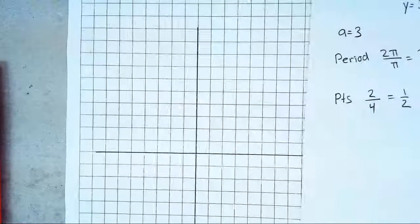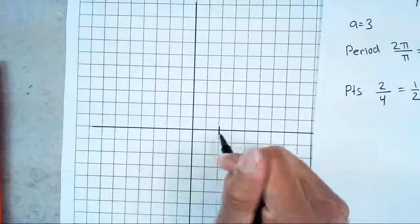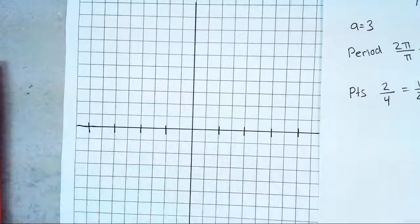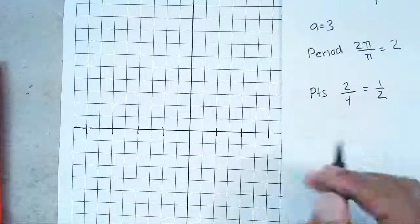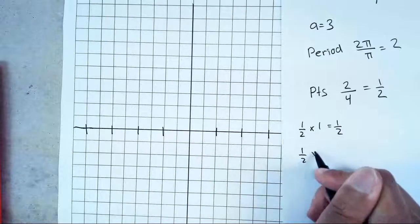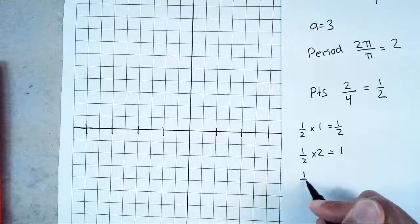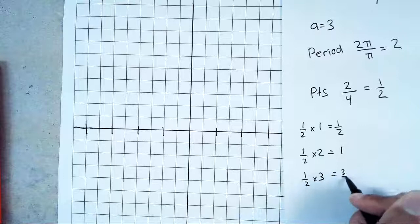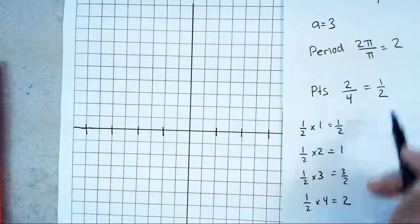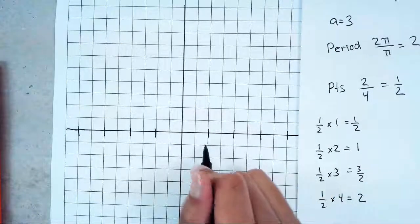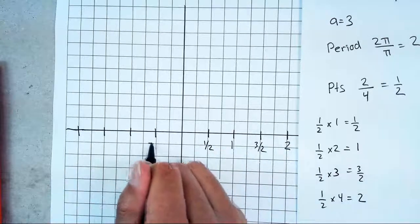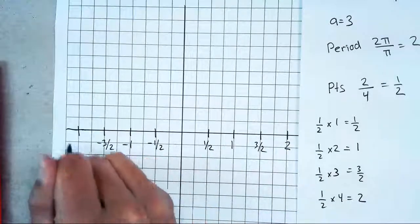Draw your 4 spaces, and if you want the negative side, 4 more spaces. Find the points by multiplying 1/2 by 1, 2, 3, 4: giving 1/2, 1, 3/2, and 2. Remember, the last point should always match up with the period — they're both 2, so you know you did it right. For the negative side: negative 1/2, negative 1, negative 3/2, negative 2.